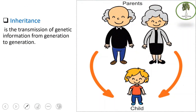Have you ever wondered why you look like your parents? Why you have special characteristics from each parent — like curly hair, skin color, or height? All of these come under one title: inheritance. Inheritance is the transmission of genetic information from generation to the next generation, sometimes referred to as heredity. The study of inheritance or heredity is called genetics.